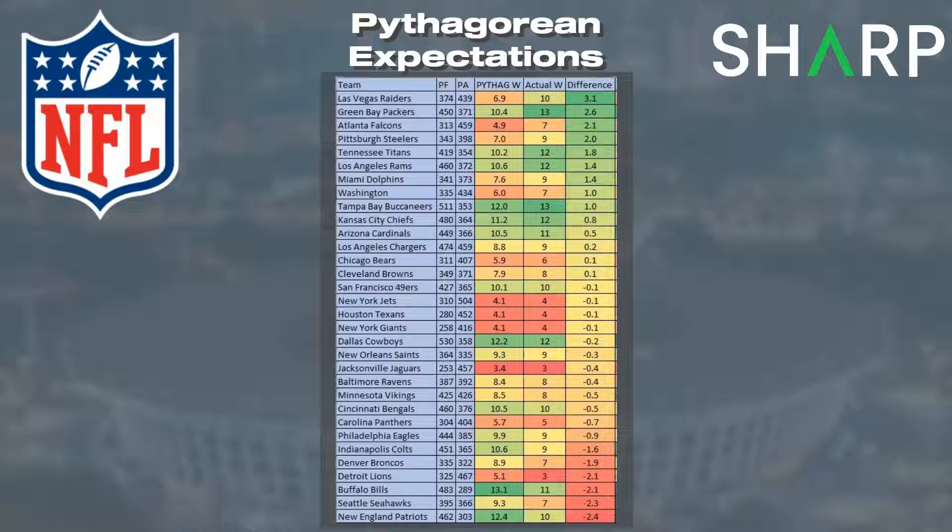Right at the top, we've got the Raiders with a 3.1 win differential over last season. They won 10 games last year; the Pythag win percentage was 6.9 — so let's call it seven wins expected. That tells us the Raiders were an extremely lucky team. If we go all the way down to the bottom, you can see the Patriots. They were expected to win 12.4 games and only won 10, so from this calculation we're looking at the Patriots as a team that was a bit unlucky last season. You want to look for teams that were extremely lucky or extremely unlucky last year to potentially get closer to expectation this year on their win total.